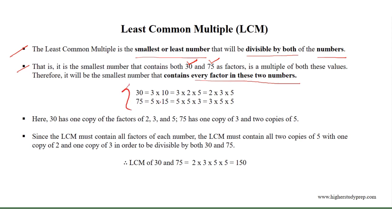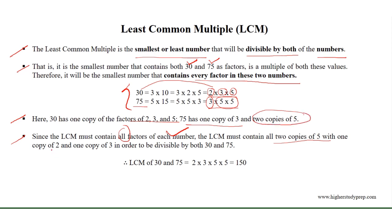If we take the factors of 30 and 75, we can write that 30 equals 2 times 3 times 5, and 75 equals 3 times 5 times 5. Here, 30 has one copy of the factors 2, 3, and 5, and 75 has one copy of 3 and two copies of 5. Since the least common multiple must contain all factors of each number, it must contain two copies of 5, one copy of 2, and one copy of 3. Therefore, the least common multiple of 30 and 75 equals 2 times 3 times 5 times 5, which equals 150.